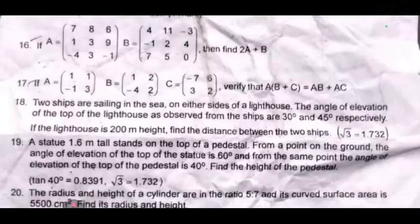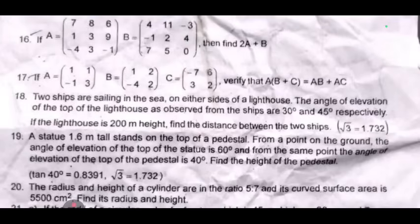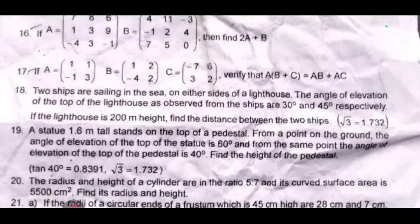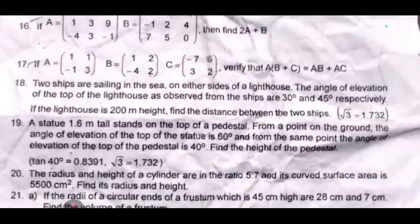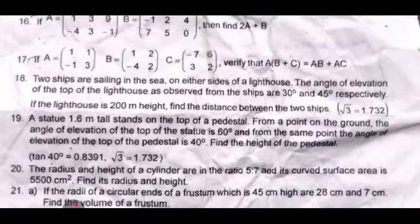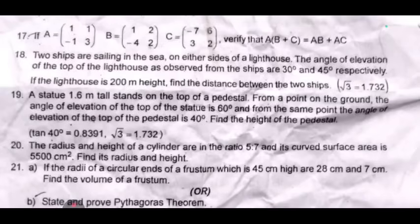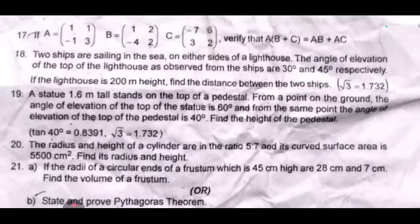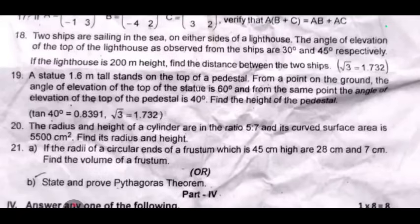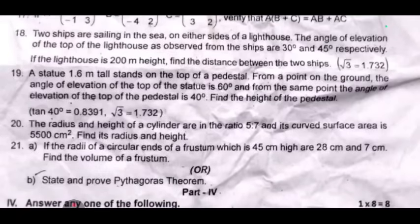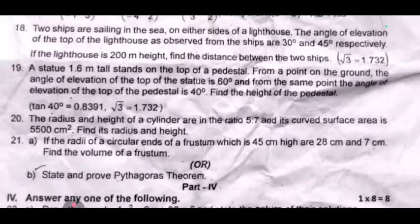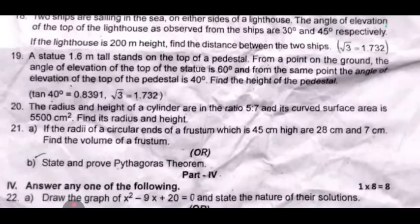Question 19: A statue 1.6 meters tall stands on top of a pedestal. From a point on the ground, the angle of elevation of the top of the statue is 60 degrees, and from the same point the angle of elevation of the top of the pedestal is 40 degrees. Find the height of the pedestal. Given tan 40 degrees equals 0.839. This is the most important one.